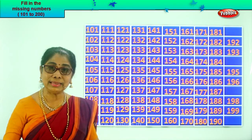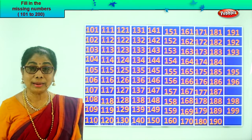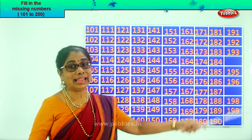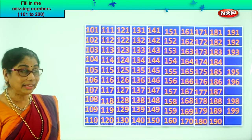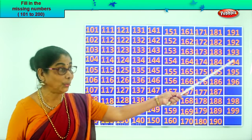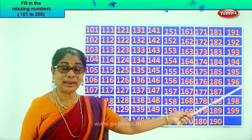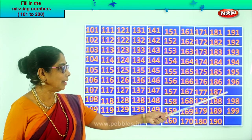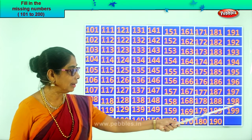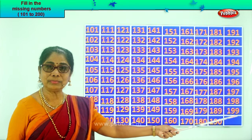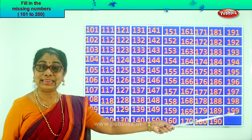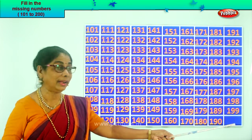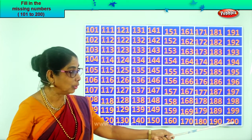Now after 90, 91. 191. So we write 191. 192, 193. After 3, 4. After 93, 94. 194. 196. After 6, 7. After 96, 97. 197, 198. 199. After 99, 100. So we have 199. The last number is 200. 199 plus one more gives 200.